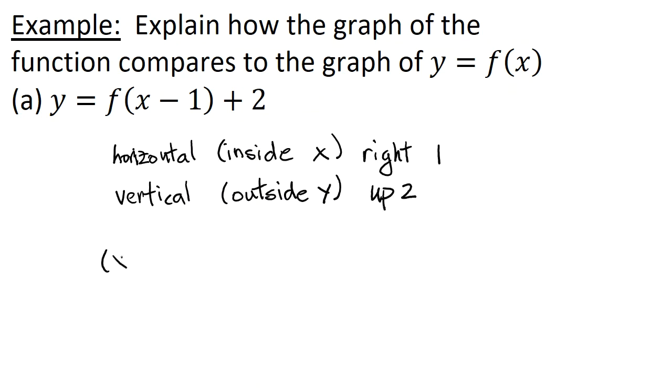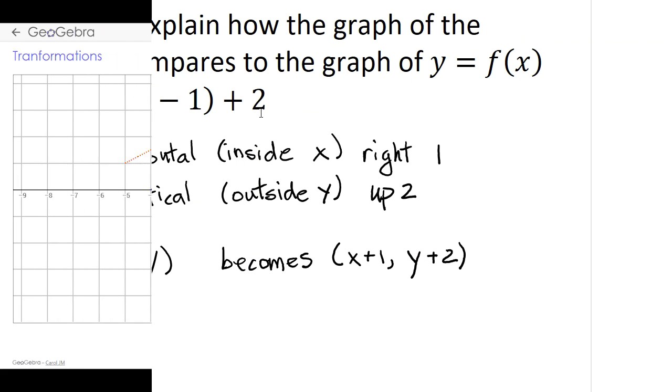So if I have a point on the original function, the original function y equals f of x, and that point is the (x, y) point, the new point becomes x plus 1. What do I have to do to get back to x? I have to add 1. And then outside the argument of the function, I just do what it says—y, f of x equals y, no matter what I feed into f of x—plus 2. Let's see what that looks like.